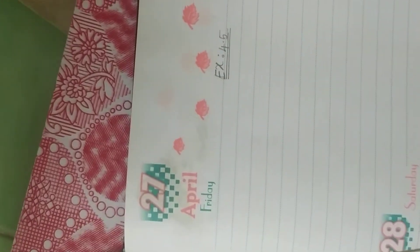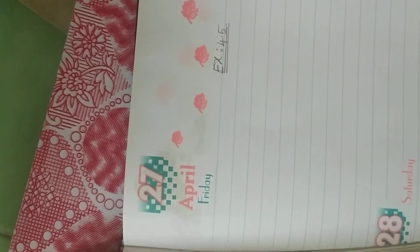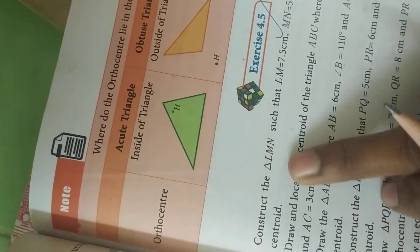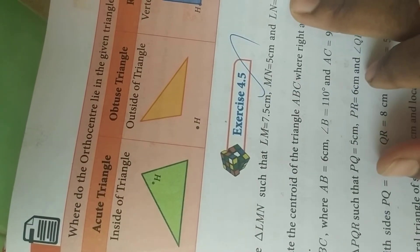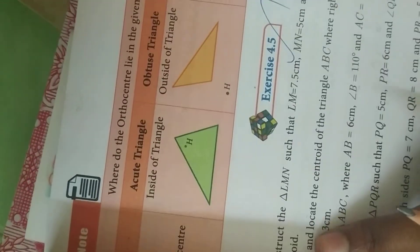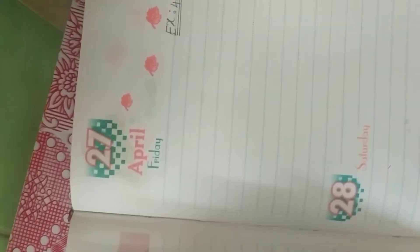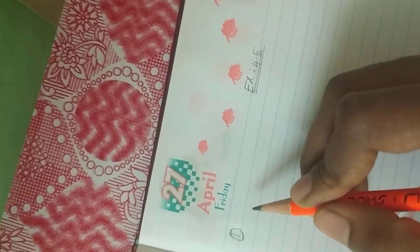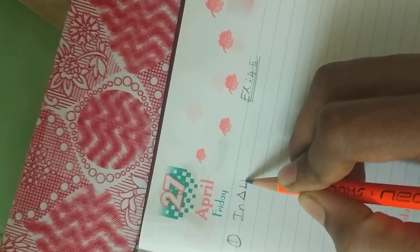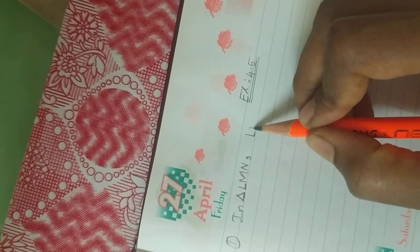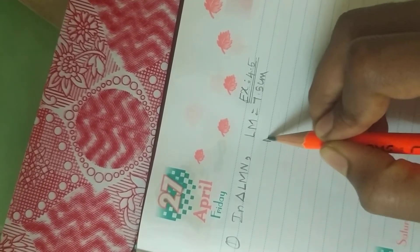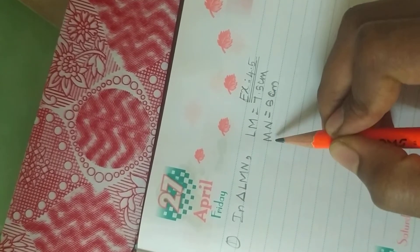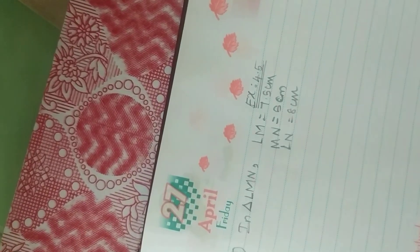The question is: Construct the triangle LMN such that LM equal to 7.5 cm, MN equal to 5 cm, and LN equal to 8 cm, and find its centroid. So we are going to find that point. You will take the notebook for your practical geometry. So, in triangle LMN, LM is equal to 7.5 cm, MN equal to 5 cm, and LN is equal to 8 cm. These are the rules.